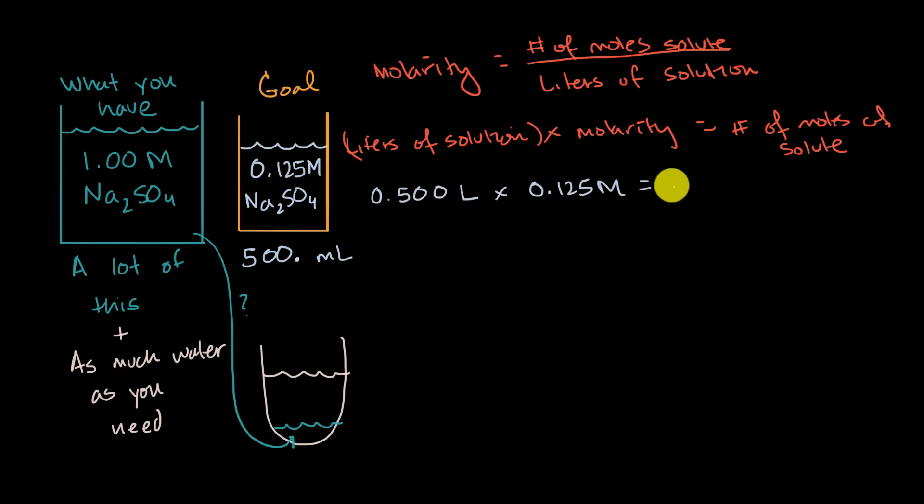And if we multiply this out, this is going to be zero point, let's see, half of 12 is six, and then half of 50 is 25, 0.0625 moles of solute. And in this case, our solute is sodium sulfate.